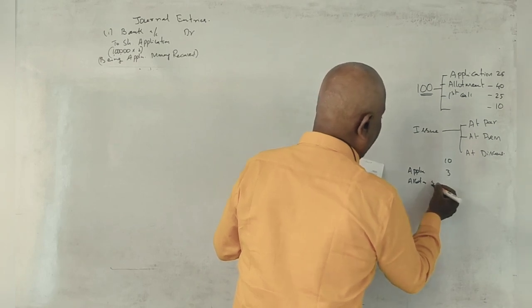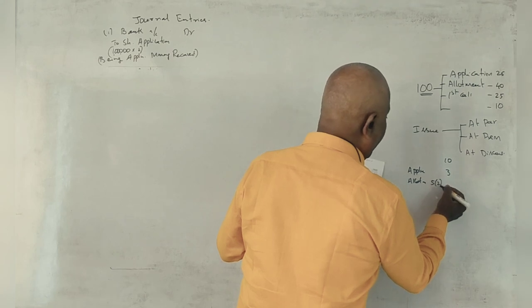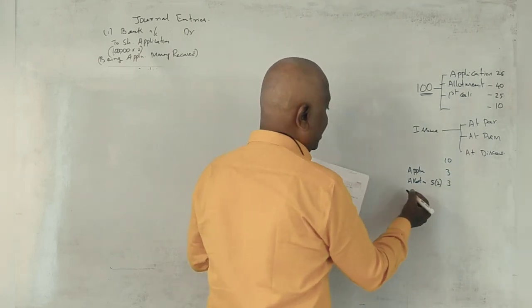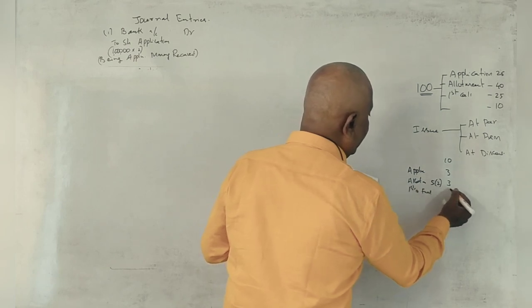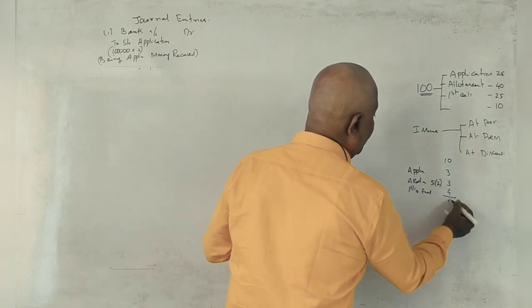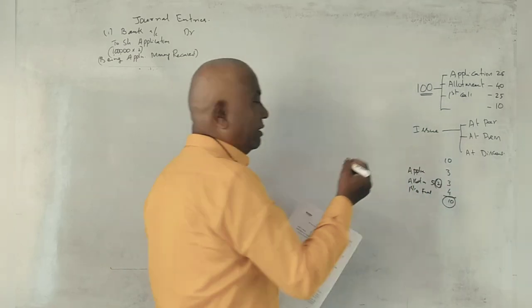So if you have a premium, you have to pay Rs. 10, then you have to pay Rs. 3. First and final call, you have to pay Rs. 4. Then you have to pay Rs. 10. Then you have to pay Rs. 2 for premium allotment.